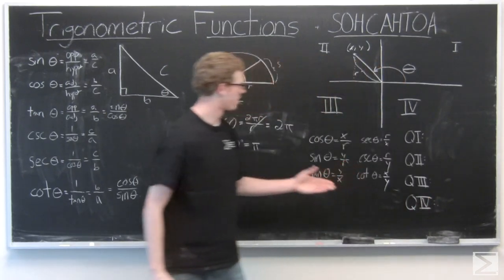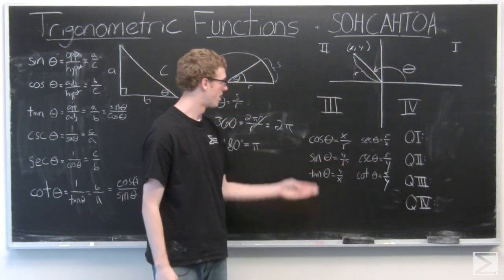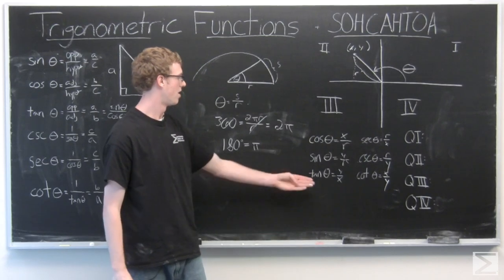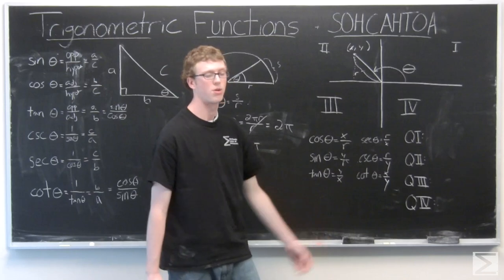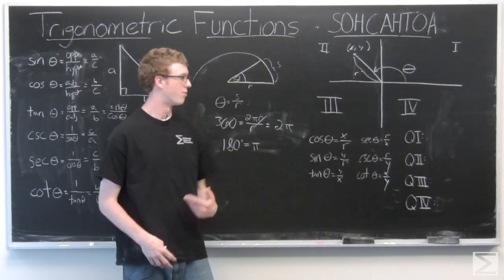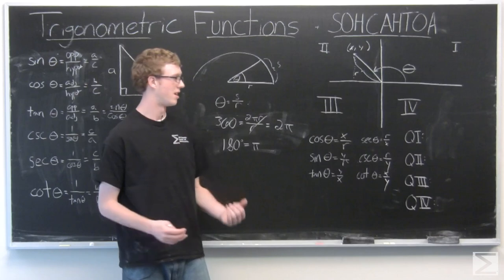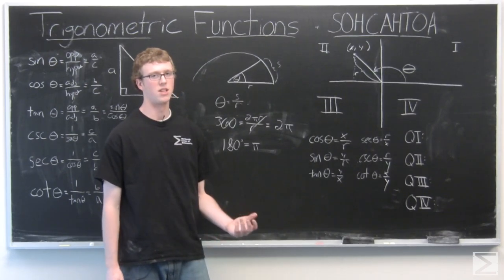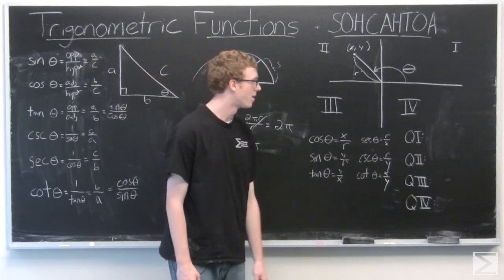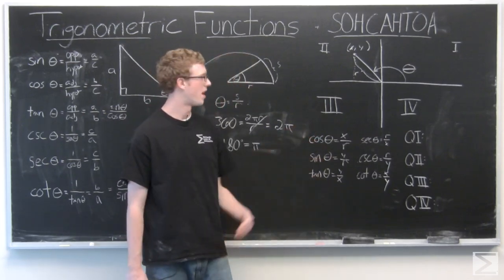So we have cosine of theta is x over r, sine of theta is y over r, tan of theta is y over x, and then the reciprocal functions. So we can get an idea of where these are going to be positive and negative based on what quadrant they're in, because the coordinates are going to change from positive or negative. So in quadrant one everything is positive.